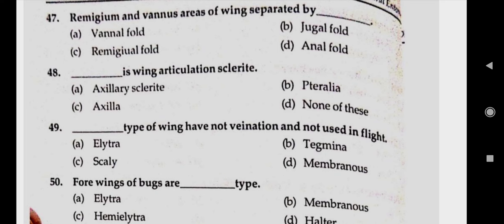Question number forty-seven: remigium and vannus areas of wings are separated by. Answer B, jugal fold. Question number forty-eight: dash type of wing articulation sclerite. Answer B, teralia.